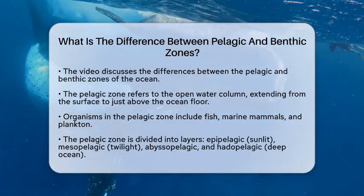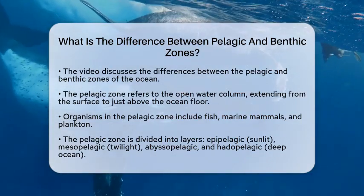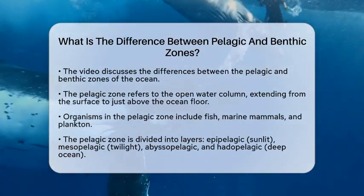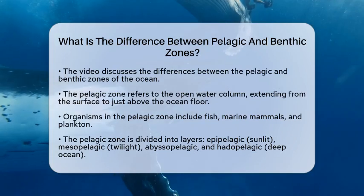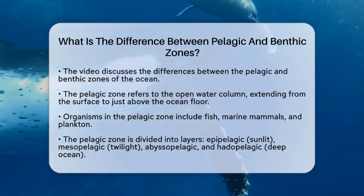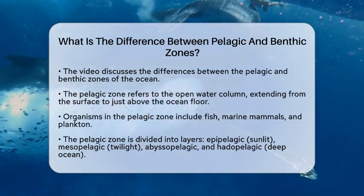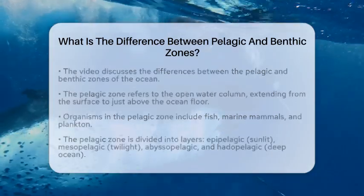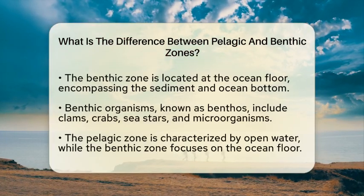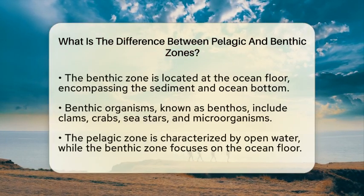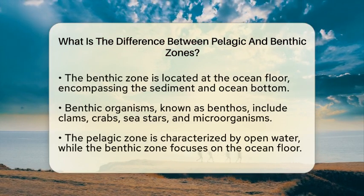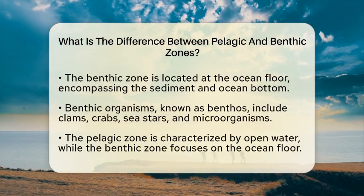The pelagic zone can be divided into several layers based on depth. The epipelagic zone is the sunlit surface layer, while the mesopelagic zone is known as the twilight zone. Deeper down, you have the abyssopelagic and hadopelagic zones, which are found in the very deep ocean waters.